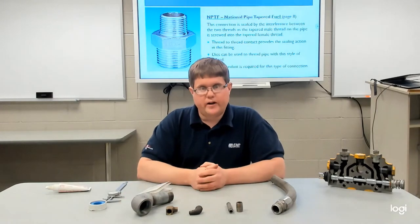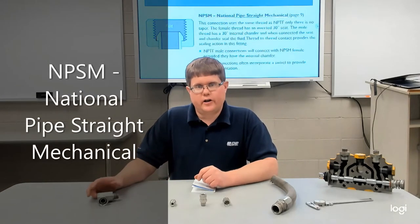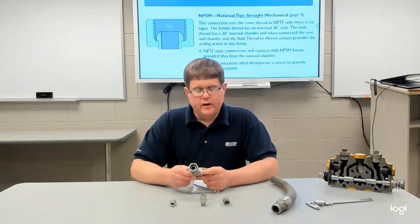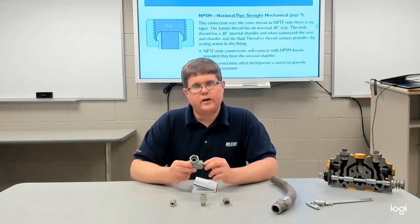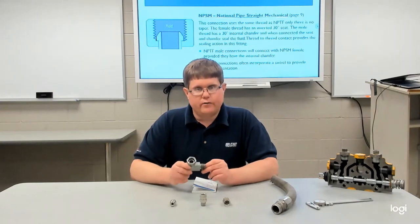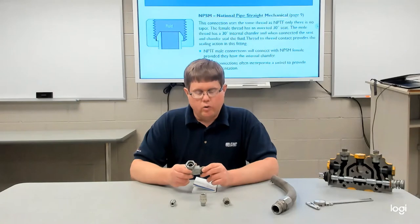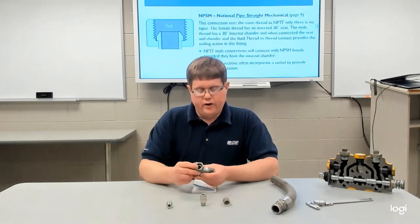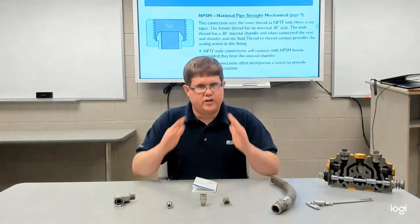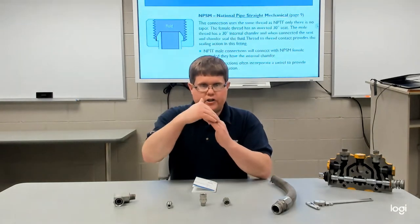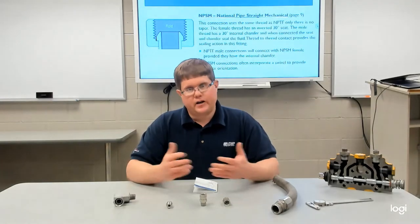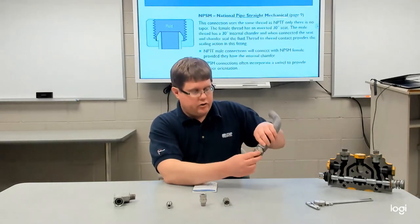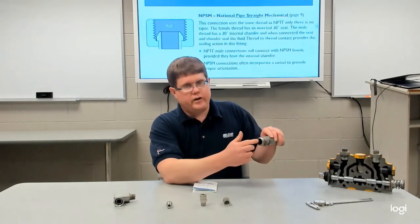The next hydraulic connection is NPSM, National Pipe Straight Mechanical. It is very similar to pipe thread in dimensions, except the pipe doesn't need to be tapered — it can be straight. The difference is that the threads no longer do the sealing. The male connection has an internal chamfer, and the female connection has a raised cone-type seat at 30 degrees that seats with that chamfer to create a sealing surface. Some pipe thread connections can be used for either NPTF or NPSM — if there's an internal chamfer, it can seal with NPSM.